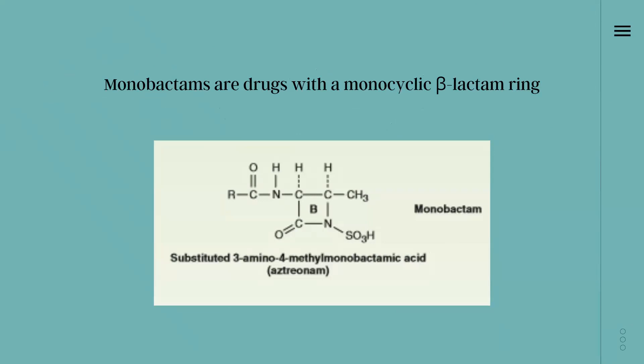Monobactams are drugs which have a monocyclic beta-lactam ring. If we talk about their structure, they have only one beta-lactam ring. As you can see here, three carbons and one nitrogen atom are attached together to form a ring-like structure, and this is called a beta-lactam ring.